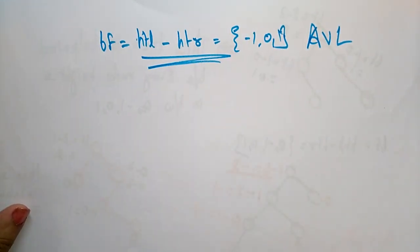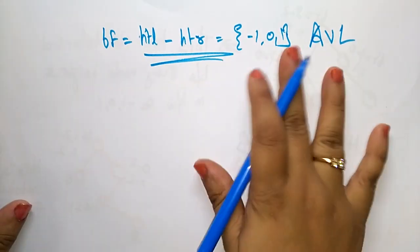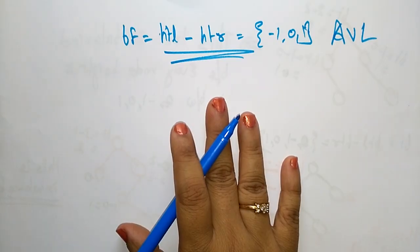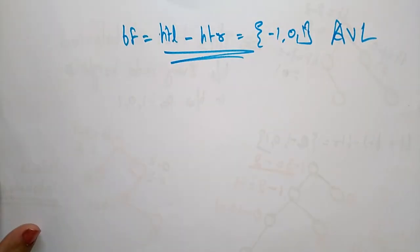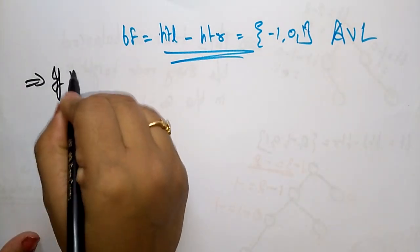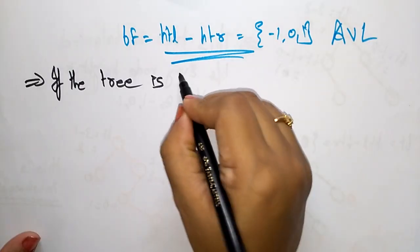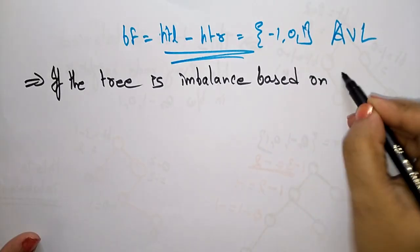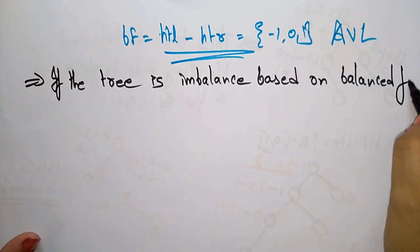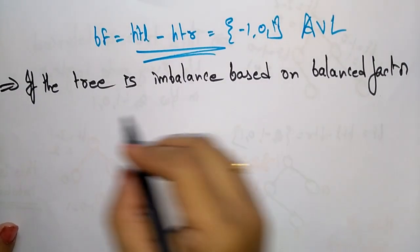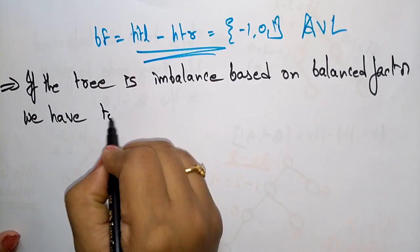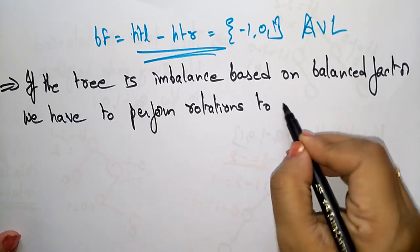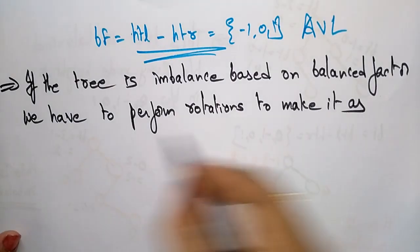So if you want to maintain the tree as balanced, you have to follow this condition. If the tree is imbalanced based on the balance factor, we have to perform rotations to make it a balanced tree.